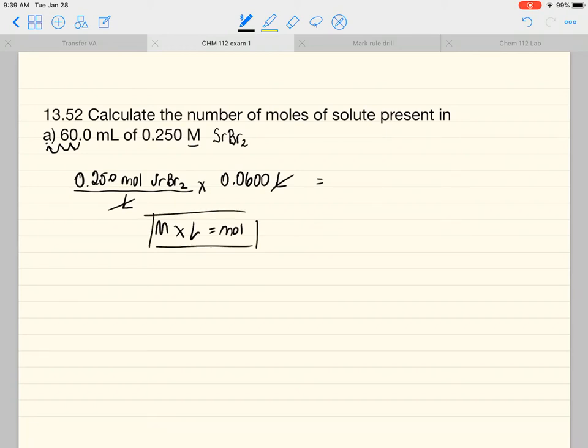0.250 times 0.0600 is equal to 0.015 on my calculator. Now, you want to watch out for this because this has 1, 2, 3 sig figs. This has 1, 2, 3 sig figs, so we need to add a 0 to this to make sure that we have the correct number of sig figs because the 1 and the 5 and the 0 are significant.